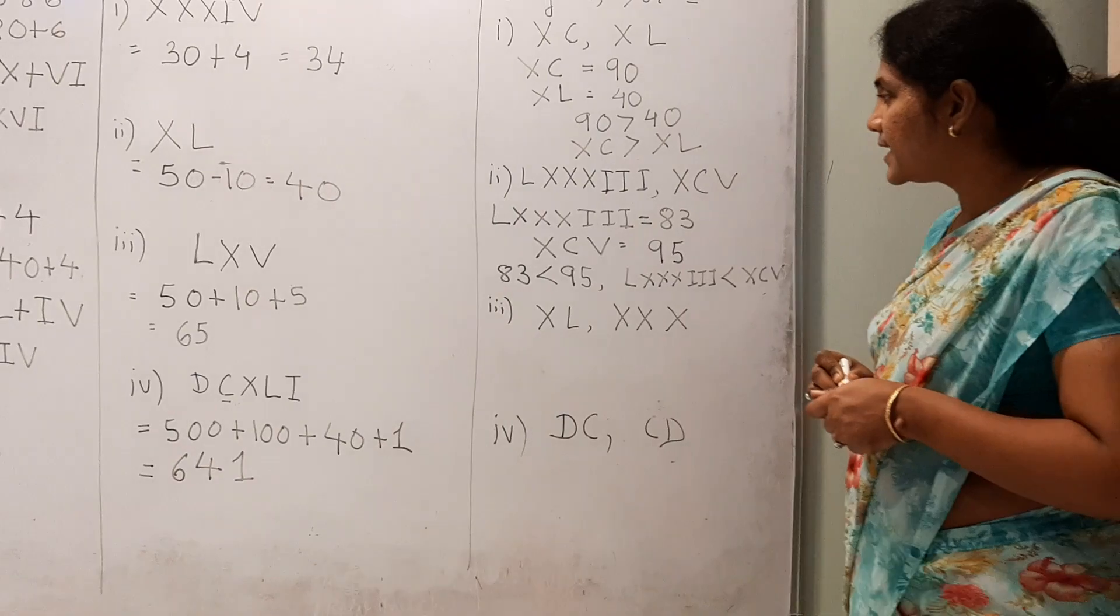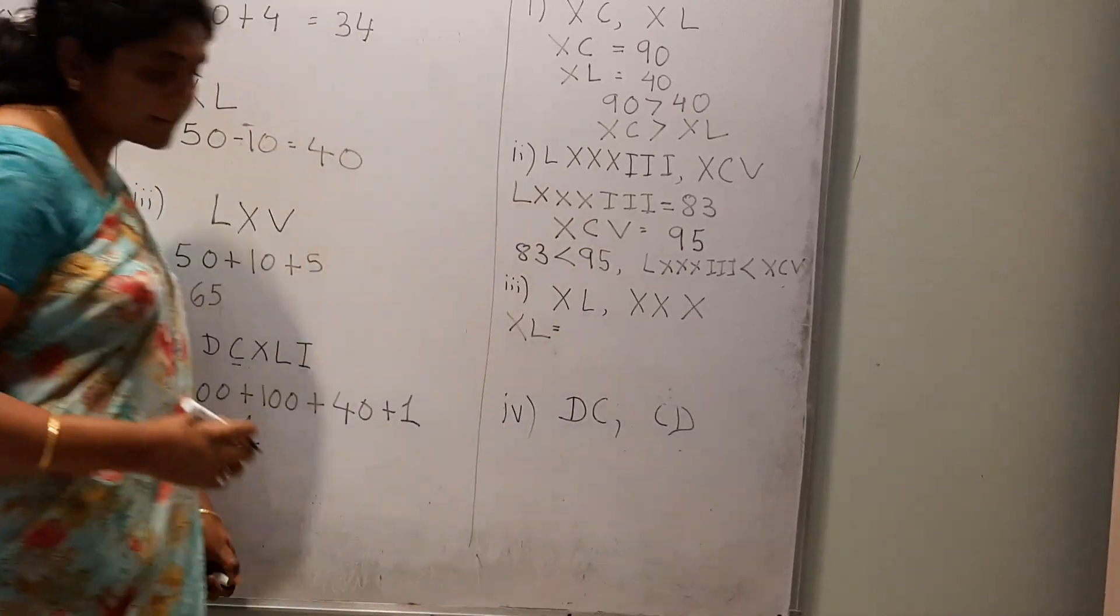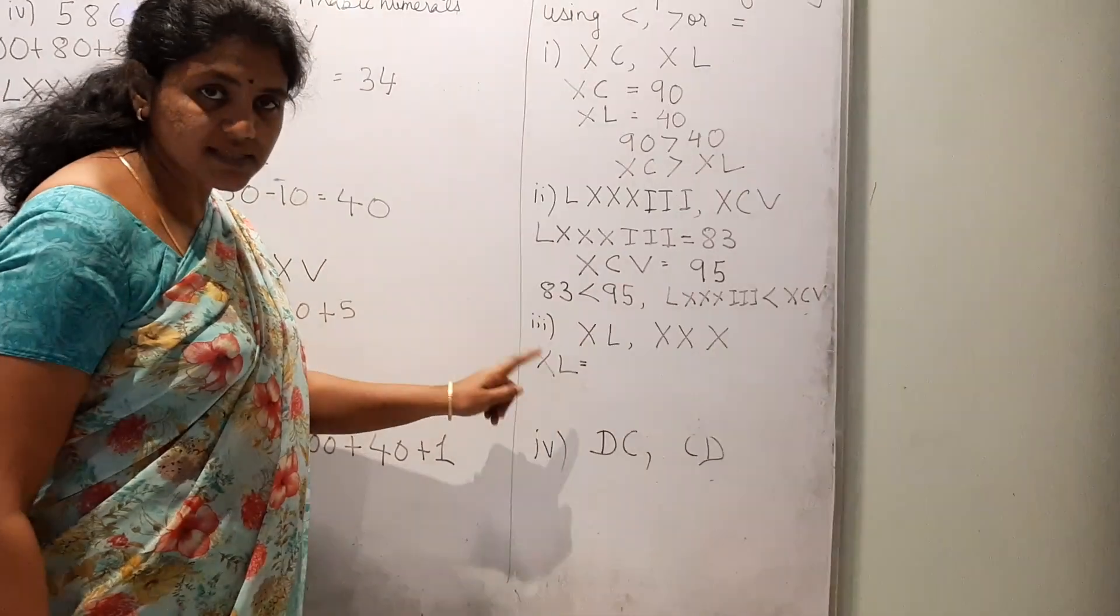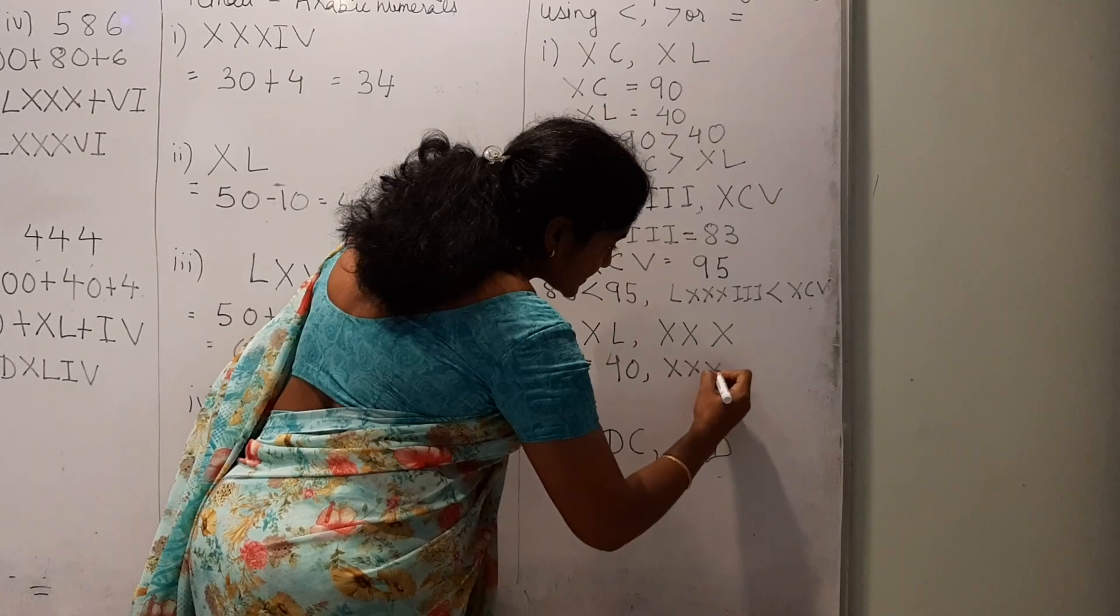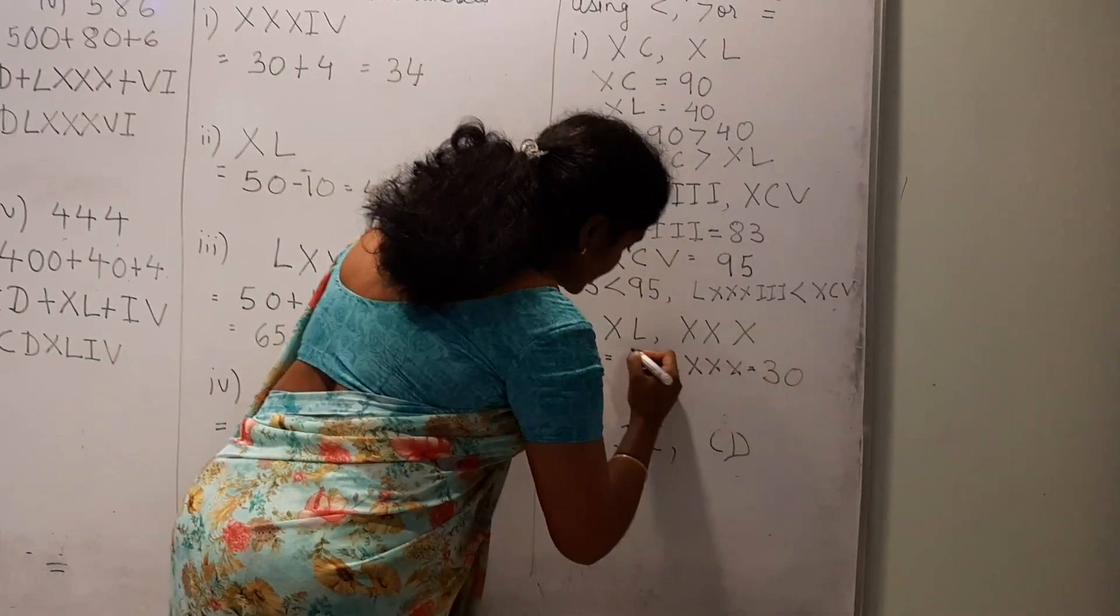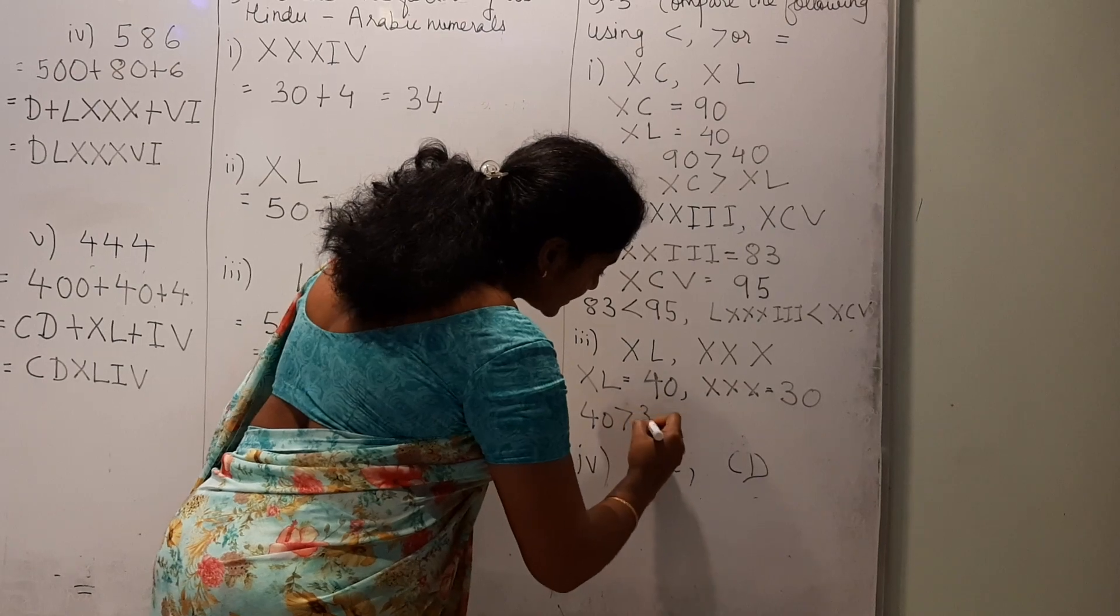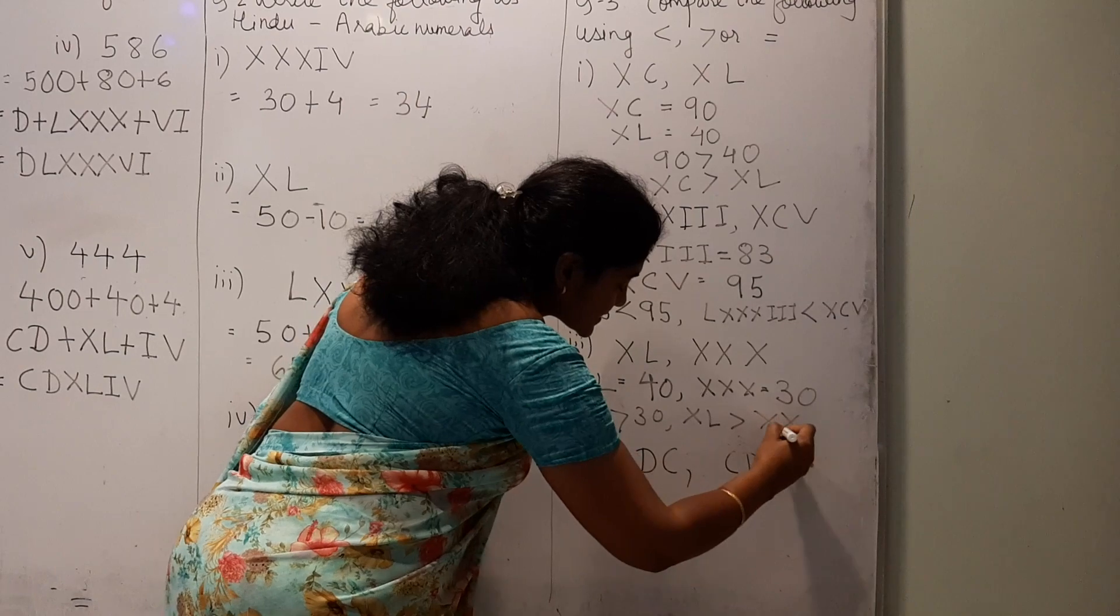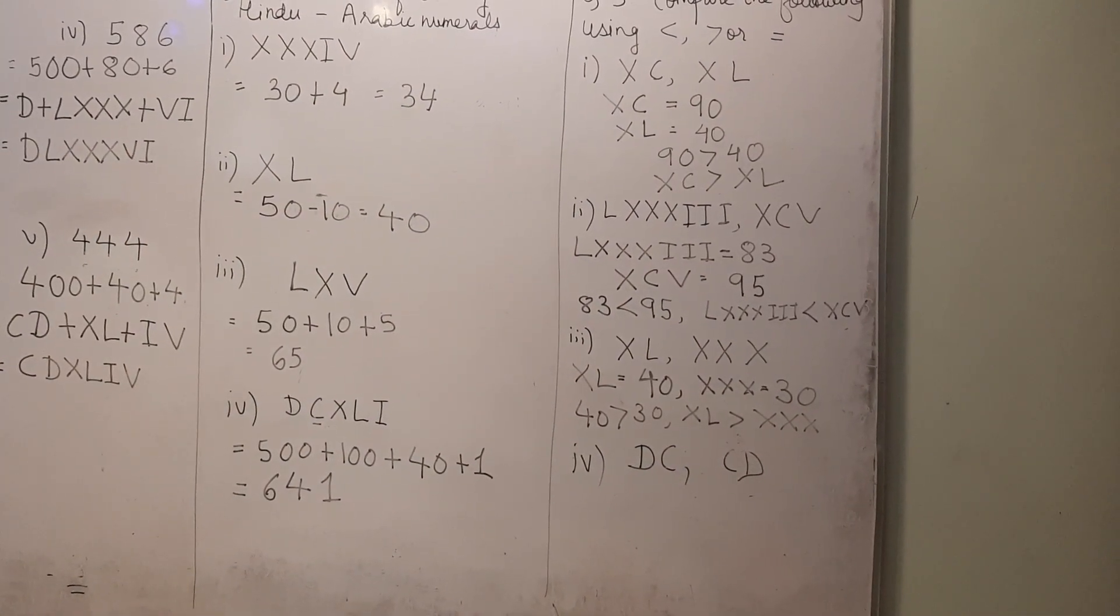Now, XL and XXX. XL is L is 50, 10, 50 minus 10, 40. XXX, this will be 30, which is greater, 40 is greater than 30. That means, XL is greater than XXX.